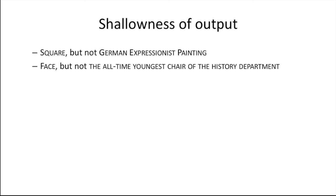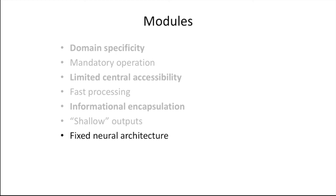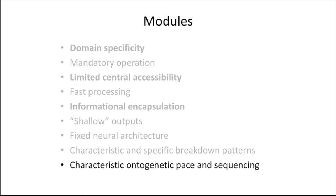Fodor also speculates that many modules may have a fixed neural architecture, though he doesn't put much emphasis on this. He also says that when modules fail, due to injury or illness, they don't malfunction in random ways, but rather exhibit specific breakdown patterns. So for example, we have associated with the linguistic system a series of aphasias, and damages to particular subsystems of the visual system manifest themselves in characteristic syndromes, such as the different kinds of agnosias. Finally, modules show a characteristic ontogenetic pace and sequencing. Ontogenetic means related to the development of the individual. So what Fodor is pointing out is that modules tend to follow specific developmental paths and timelines.